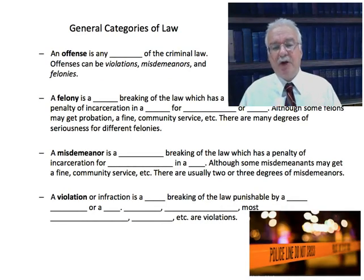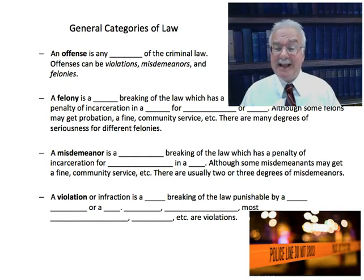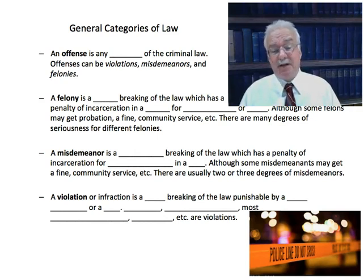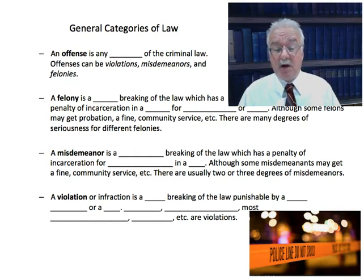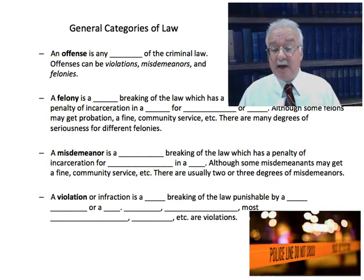Let's talk about the general categories of law. An offense is any breaking of the criminal law, and offenses can be violations, misdemeanors, and felonies. A felony is a serious breaking of the law which has a penalty of incarceration in a prison — prisons are run by the state — for over a year, although some felonies can have death as a penalty if they are capital offenses.